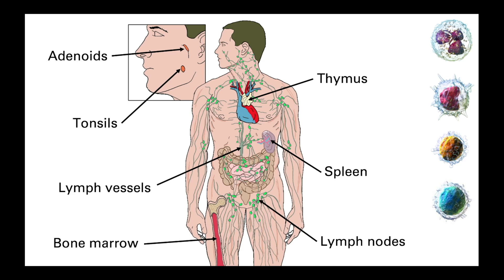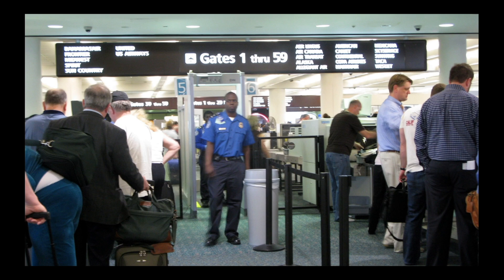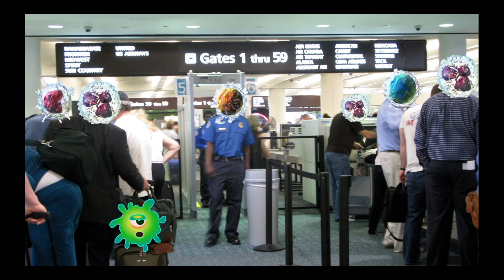Perhaps the best analogy for what the lymphatic system does was given by Hank Green of Crash Course fame: imagine the immune cells contained in the high-pressure circulatory system are passengers at an airport trying to get through the security checkpoint as quickly as possible. The trouble with pushing people through security quickly is that potential threats may also sneak through, which is why security guards occasionally ask random individuals to step out for a more in-depth search. This slower-moving line is the equivalent of the lymphatic system.